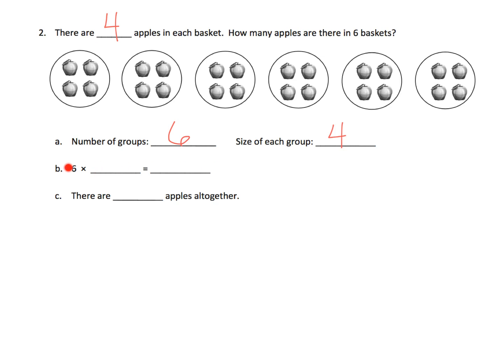Our multiplication sentence, the way we are defining it right now, is 6 times 4 equals what? That's the total number of apples — how many apples are there in 6 baskets? We're going to count all of these apples and get 24 apples. Parents and teachers, this is a great opportunity to let your kids practice counting and get that 1-to-1 correspondence. It's also a good opportunity to allow those who can to skip count: 4, 8, 12, 16, 20, 24.